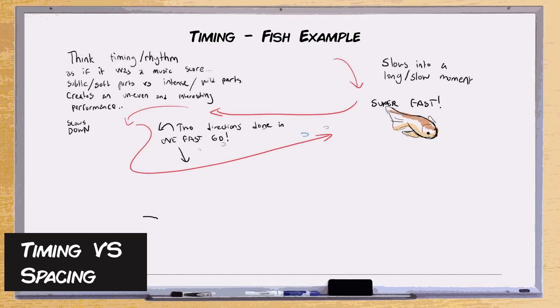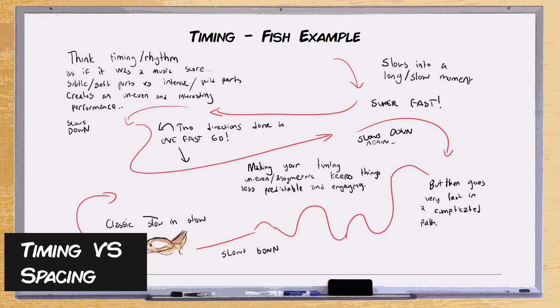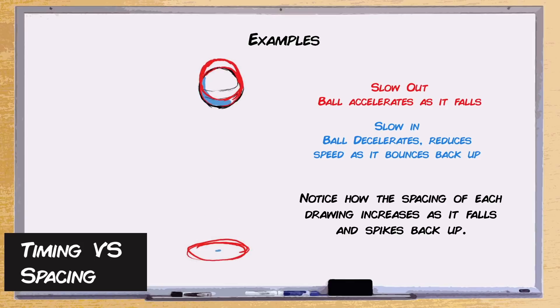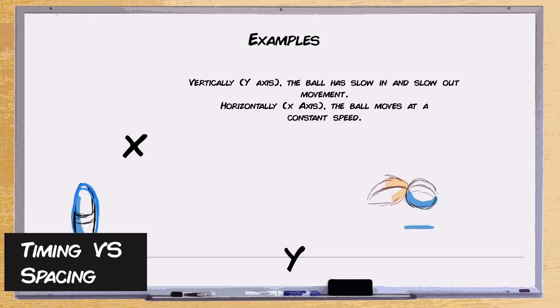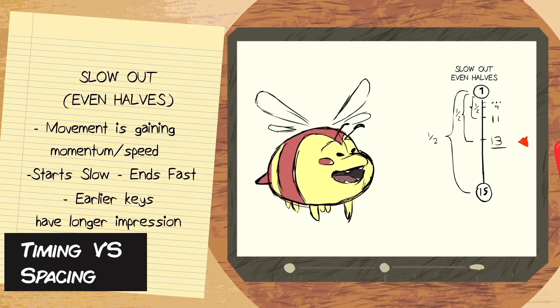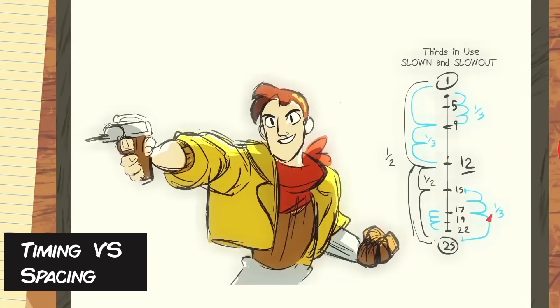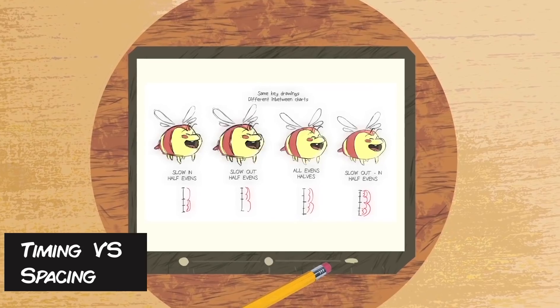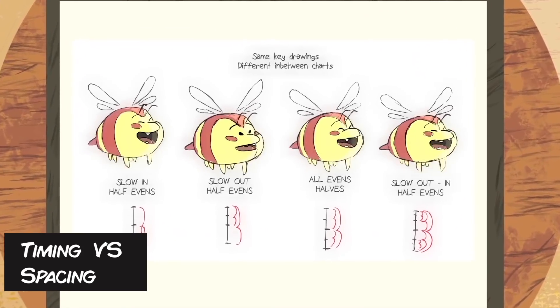Another commonly confused one is timing and spacing — two very different things. Timing is about how long or how much time is given to a certain action or moment, whereas spacing is about how far apart each drawing is from the previous to the next frame. I've seen people mistake spacing for timing all the time, and there are a lot of reasons for that. One reason is the charts — many schools and studios still call these timing charts, which makes it easy to see how people mistake the spacing notes on a chart for timing.